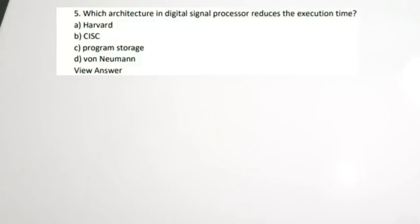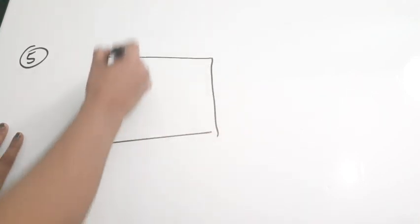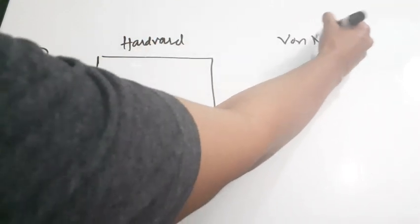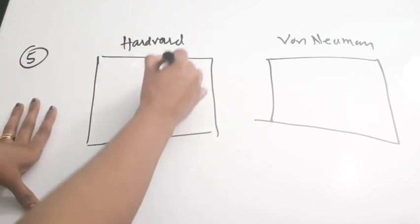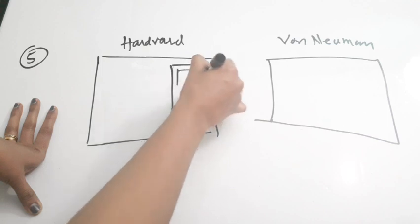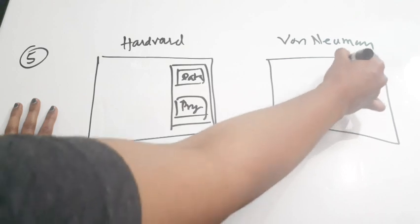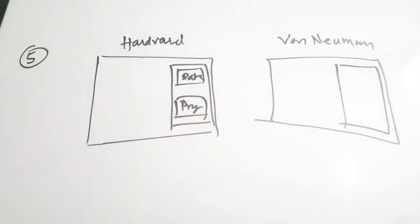Question five: which architecture in digital signal processors reduces execution time? Options: A — Harvard, B — CISC, C — program storage, D — Von Neumann. We have discussed these two types of architectures in earlier microprocessor videos. There are two basic methods of organizing DSP architecture — Harvard or Von Neumann. In Harvard architecture, memory is divided into data memory and program memory.